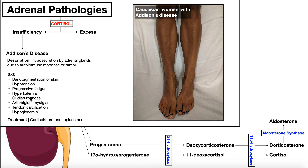There may also be GI disturbances, joint pain, and muscle pain. Sometimes tendons can calcify if this goes on for a long period of time. And also hypoglycemia — cortisol's normal function is to raise blood glucose, in part sparing it for vital organs like the brain. With insufficient cortisol, blood glucose will be lower, therefore hypoglycemia.